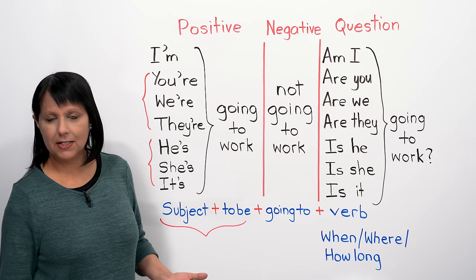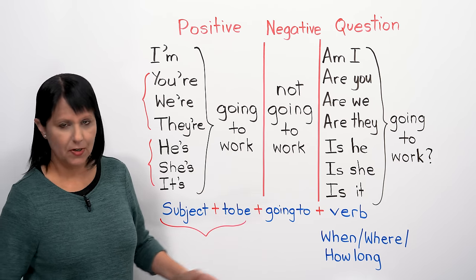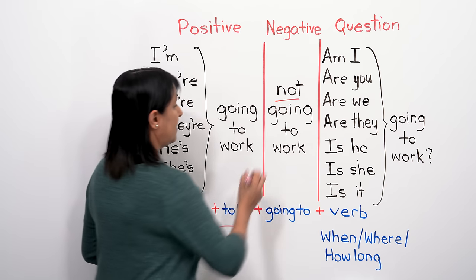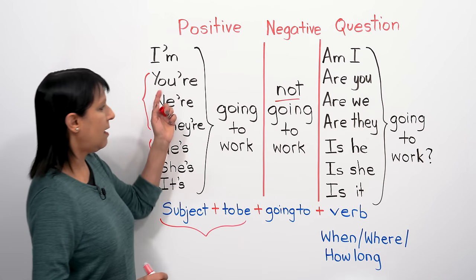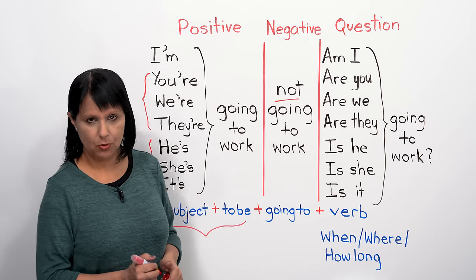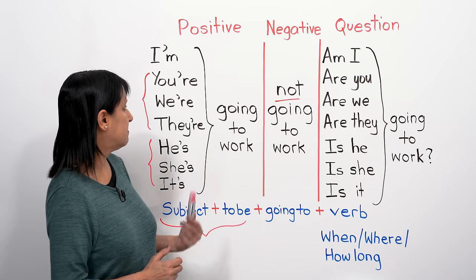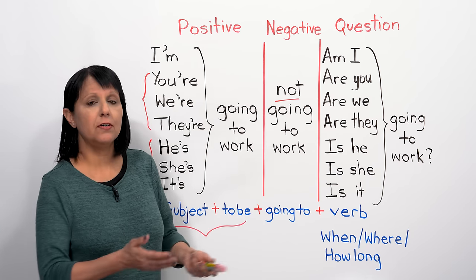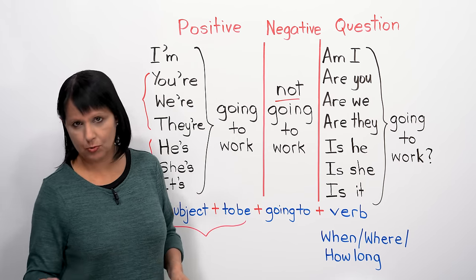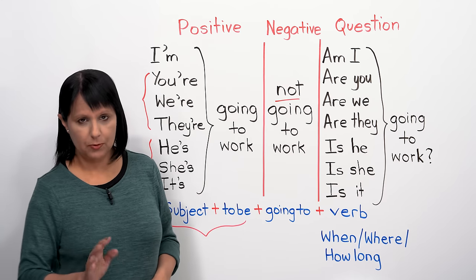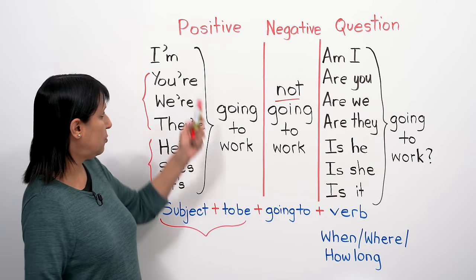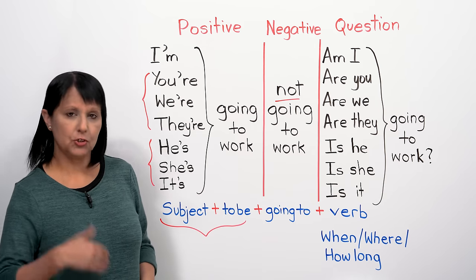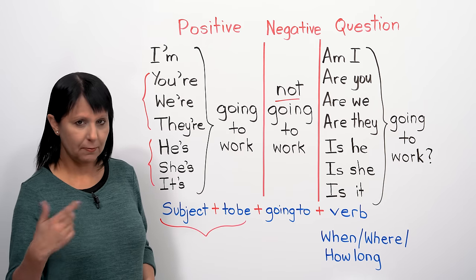If we make it negative, it's very easy — we're just adding the word 'not.' I'm not going to work tomorrow. He's not going to work. They're not going to work. So you keep this contracted version and just add 'not.'